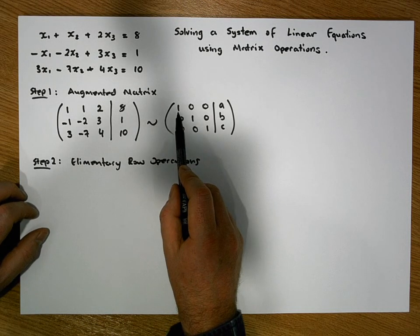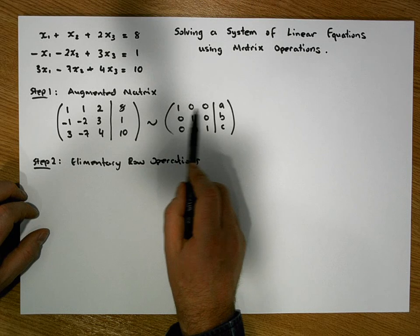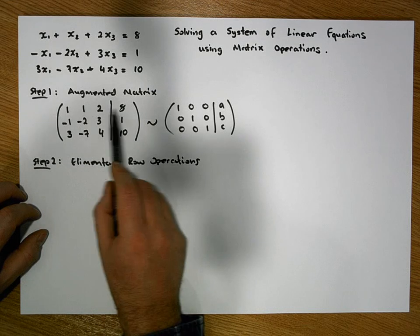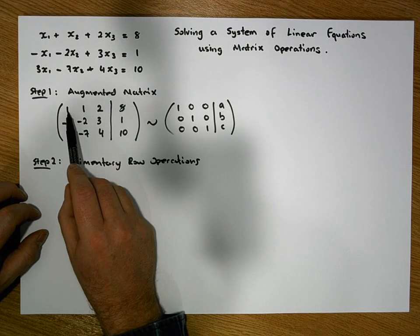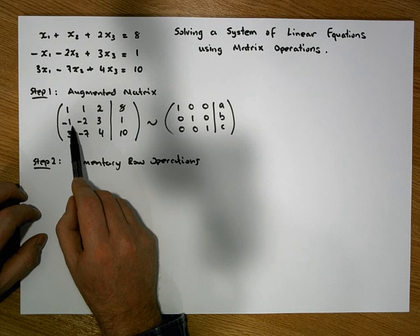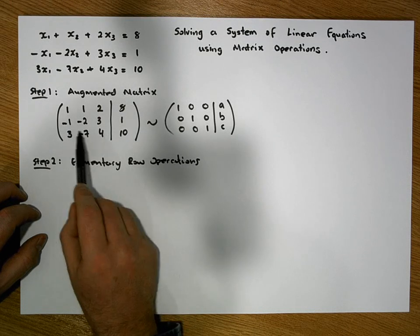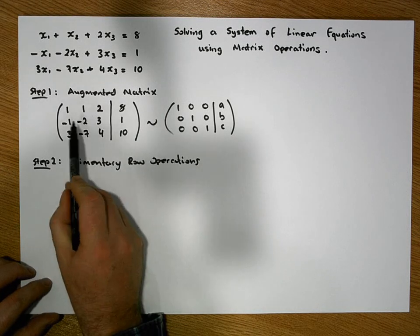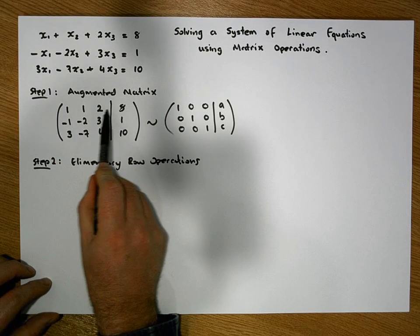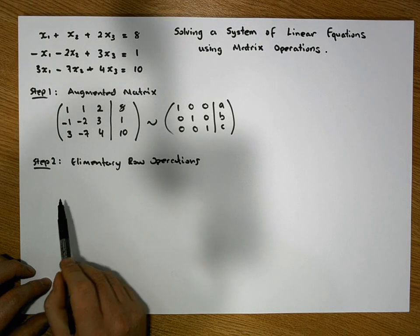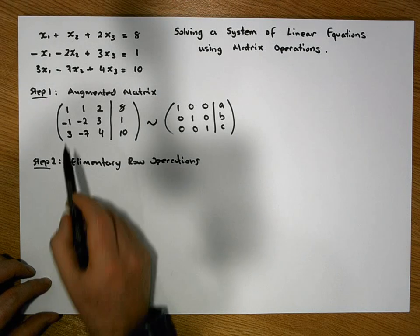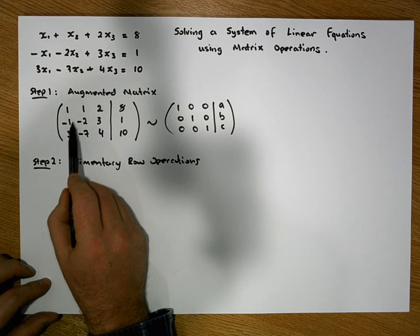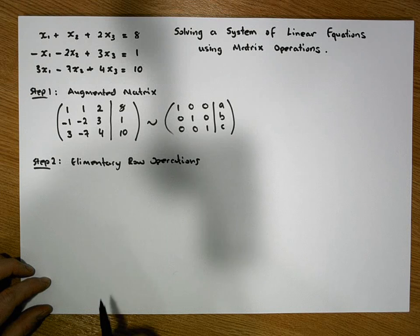We already have a 1 in the first entry of the first row, so nothing needs to be done there. Once we have a leading 1 in the first row, we proceed to change the other equations so their leading entries are zeros. Adding row 1 to row 2 would make the -1 become zero, since 1 plus -1 gives 0.